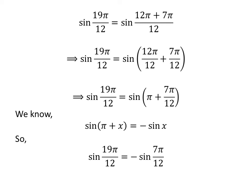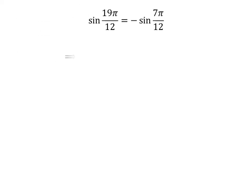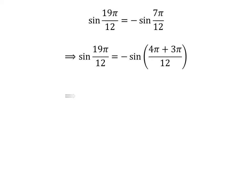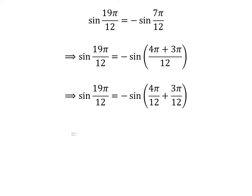The application of the above identity gives us sin of 19 times pi upon 12 is equal to minus sin of 7 times pi upon 12. So sin of 19 times pi upon 12 is equal to minus sin of pi upon 3 plus pi upon 4.